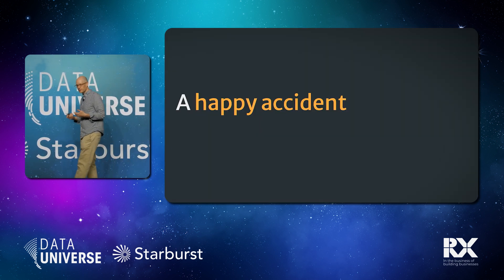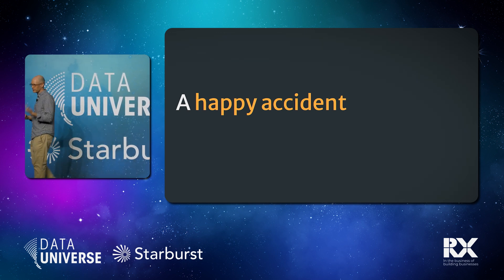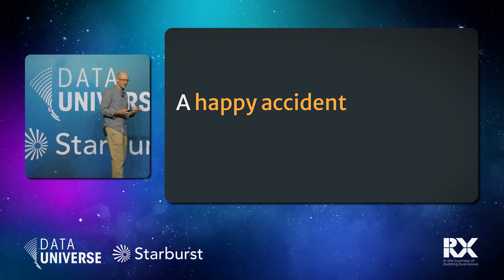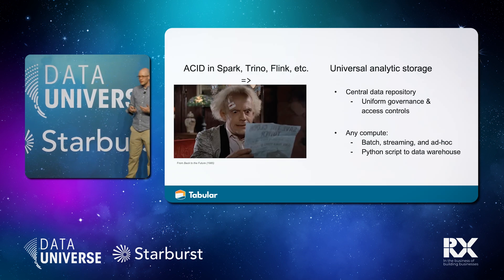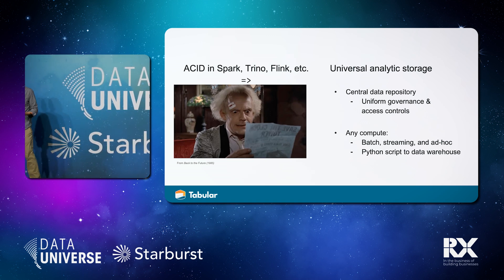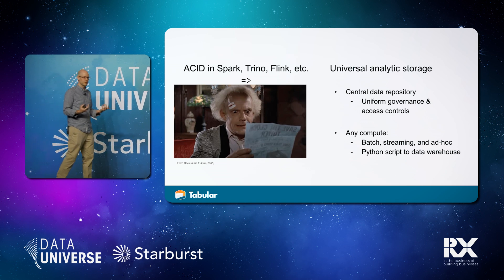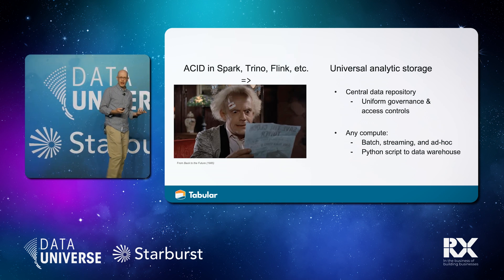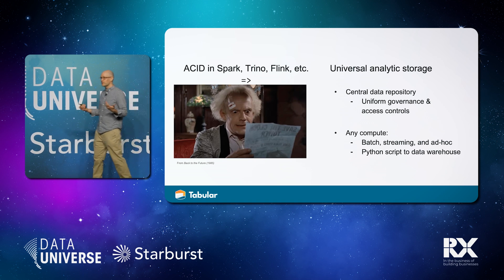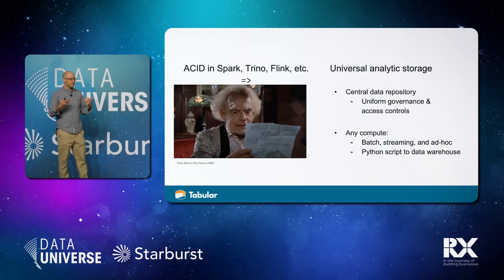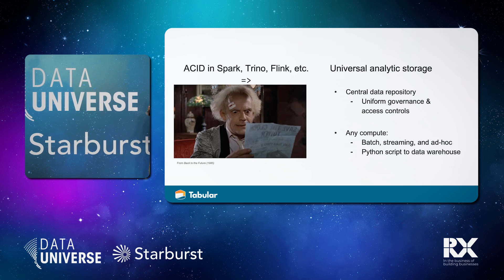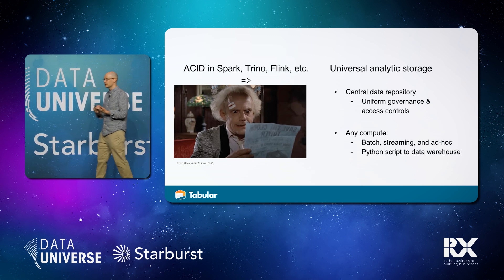We call this a happy accident because when we started, we didn't really understand what problem we were solving. We were initially just trying to get Spark, Trino, and Flink to all work together on the same data set. But what that ended up unlocking is a universal analytic storage representation. Once you have a few different things that can all speak the same language, pretty much everything can. That opens this up to any sort of batch processing and compute systems that know how to read and operate with Iceberg. Now we're seeing a major shift with different vendors supporting it — everything from graph databases to streaming systems interacting with Iceberg, because they have a common language.